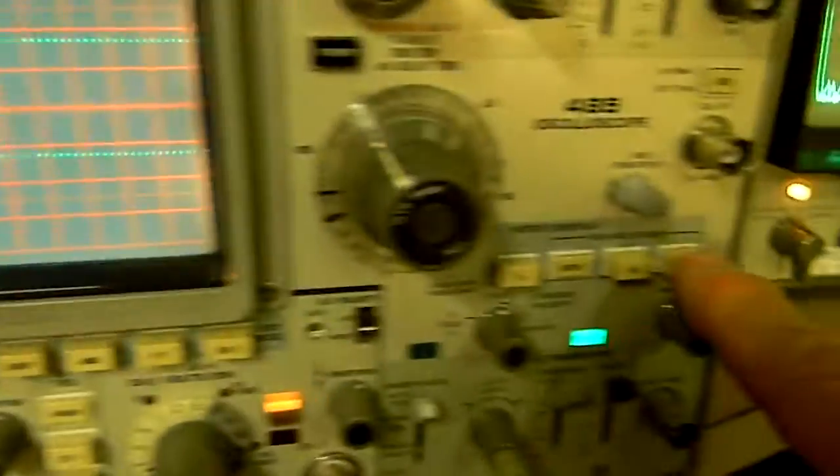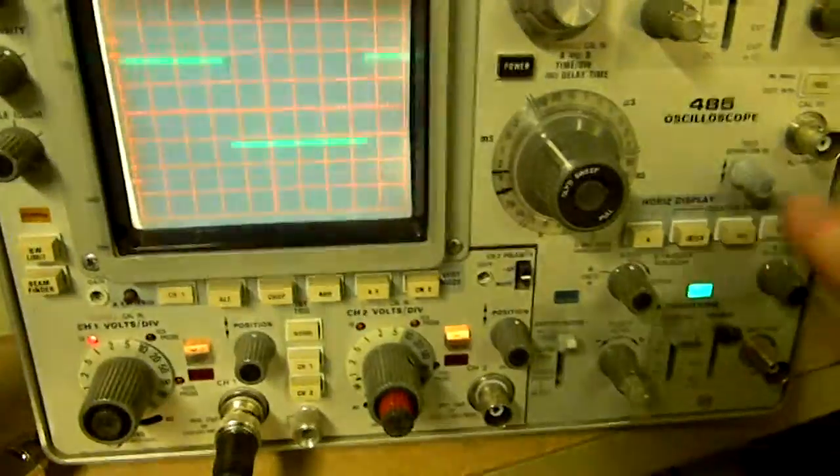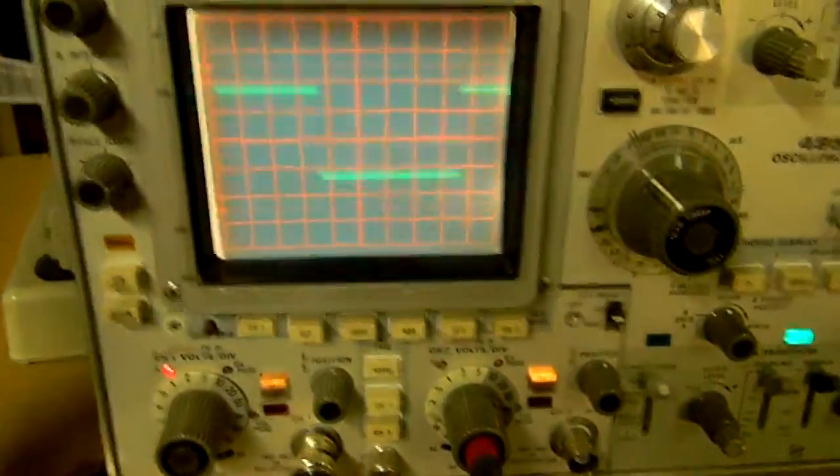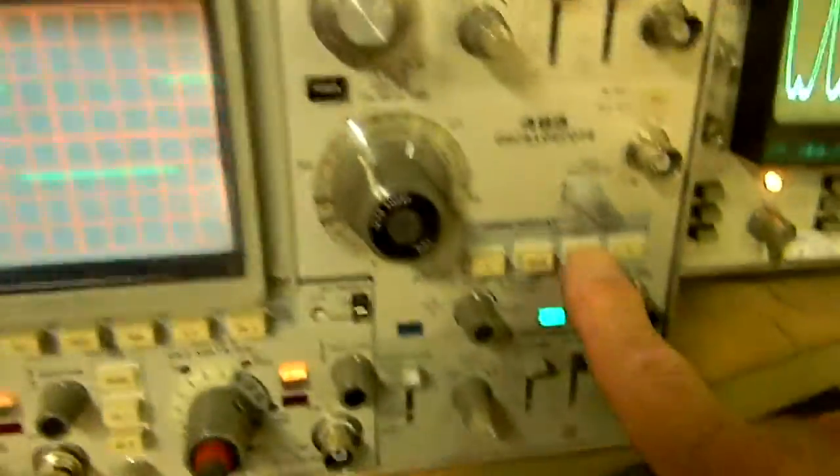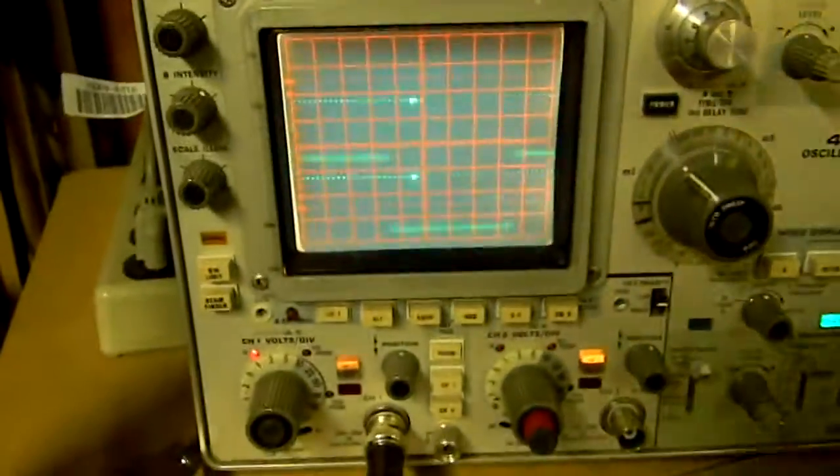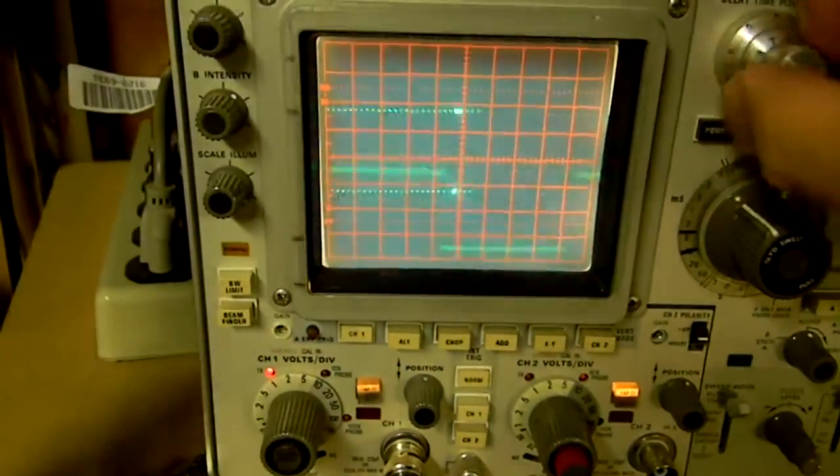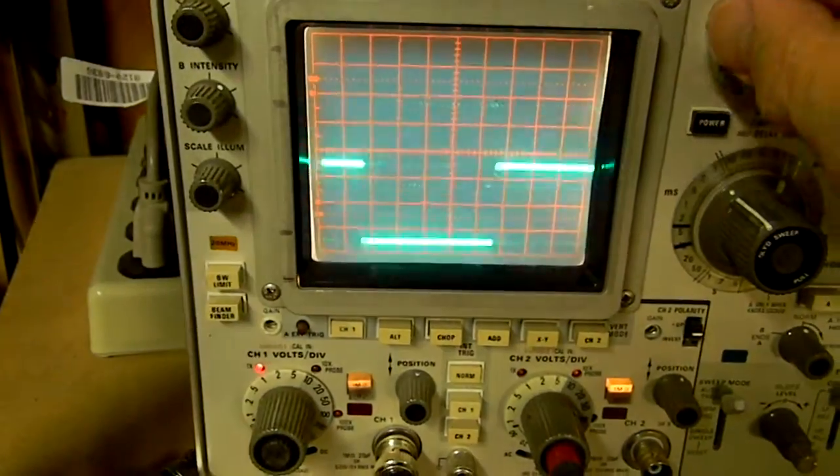And then if we go back to B here, there it is right there. There's that piece. And of course we put it on alternate here. We see both of them at the same time. Isn't that beautiful? I just find that amazing. See how I'm scrolling through it.